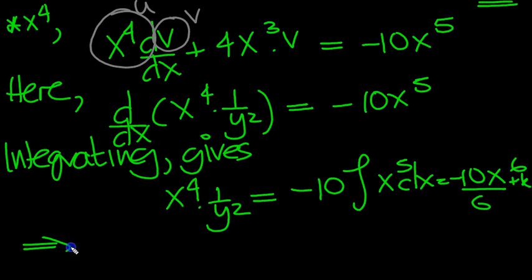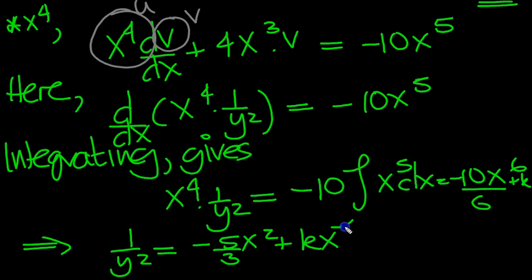So that now tells us then that 1 over y squared is equal to, now I'm going to divide by x to the 4 through this bracket here. And this 10 over 6 is 5 over 3. So it's minus 5 over 3. Divide by x to the 4 is just going to leave an x squared, plus k. And divide that by x to the 4 is the same as times by x to the minus 4.